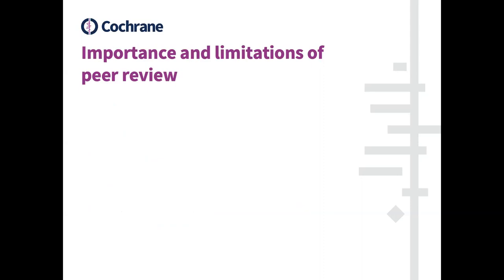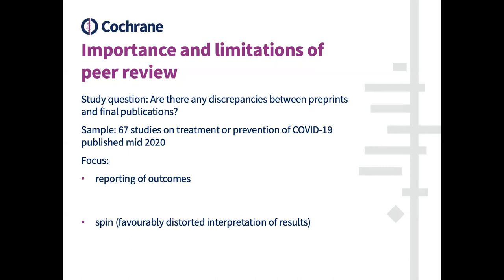Peer review is one of the big pillars of the publishing industry and one of the ways that we try and manage research integrity, but peer review has its own problems and limitations. One of the things happening now is that peer review is always part of publication, and we did a big study comparing preprints with their final peer-reviewed publications to see if there was any difference between the two, which might partly be due to the peer review process — in conjunction with Lisa Barrow and her colleagues.